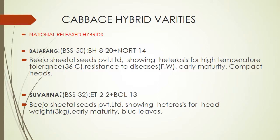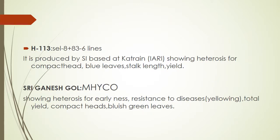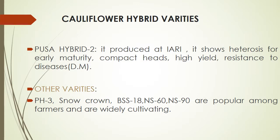Cabbage hybrid varieties: nationally released hybrids are Bajrang and Suvarna. H113 Shri Ganga Gol from Mexico. Cauliflower hybrid varieties are Pusa Hybrid 2, and other varieties are PH3, Snow Crown, BSS S18, NS60, NS90 — popular among farmers and widely cultivated.